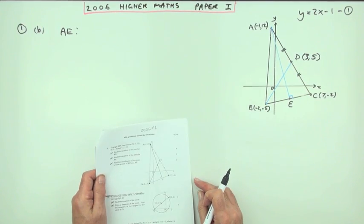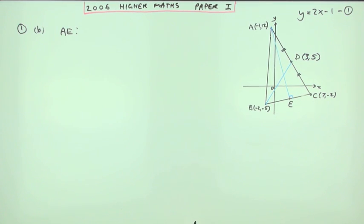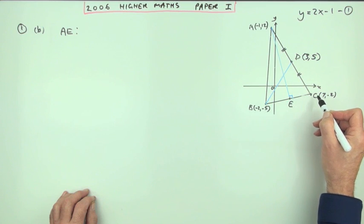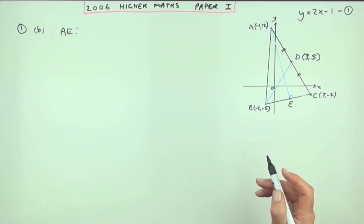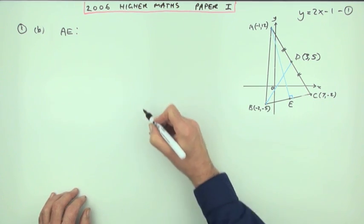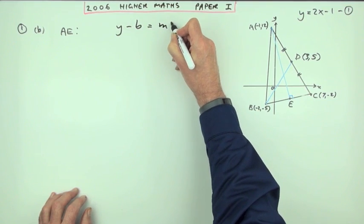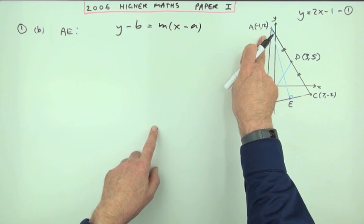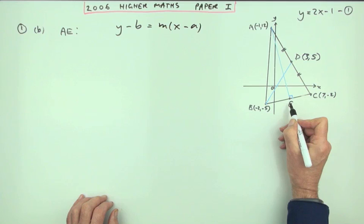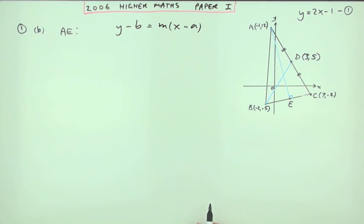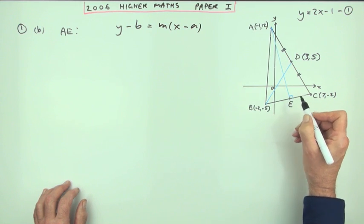For part B, find the equation of the altitude AE. The altitude goes from one vertex to meet the opposite side at right angles. It's a line, so its equation will be Y minus B equals M times X minus A. I need a point on it — I've got vertex A — and its gradient. I can't use point E because I don't know where E is.